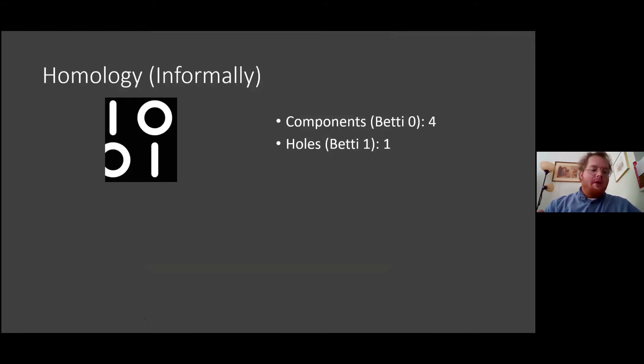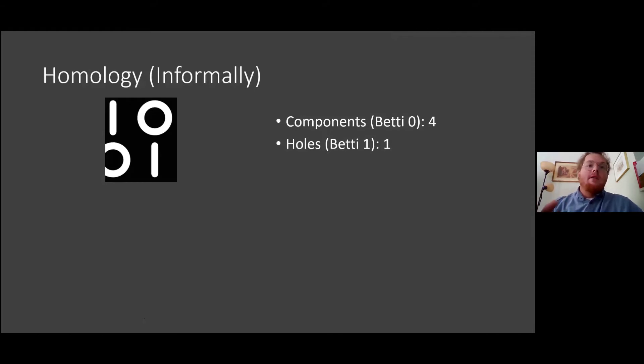We have a count of components and holes for this binary image, but we might have missed a hole in the bottom left. One simple way to deal with this is to invert the image. We can think of this as the holes becoming components and components becoming holes, but we'll see that's not exactly the case.